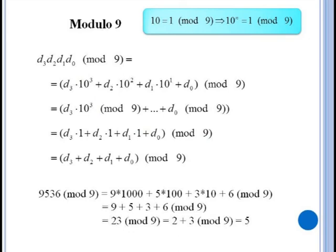Thus to compute 9536 mod nine we just add the digits. Nine plus five plus three plus six which is 23 mod nine. Then doing this again, 23 is equal to two plus three which is five mod nine. So it's very easy to compute the value of a number mod nine.